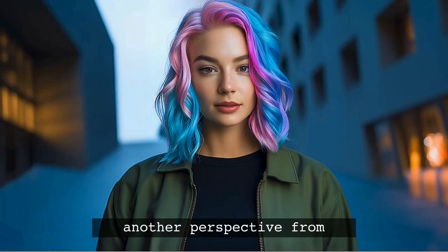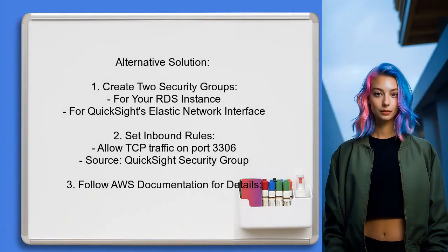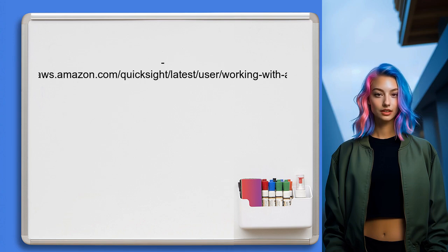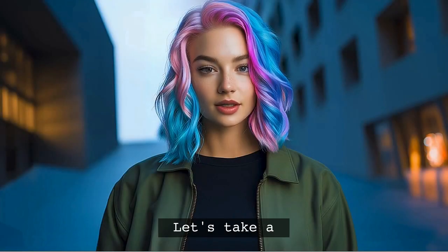Another perspective: you can connect Amazon QuickSight to an RDS database within a VPC by creating two security groups — one for your RDS instance, and another for QuickSight's Elastic Network Interface. This second security group is crucial as it allows QuickSight to access your database. Set the inbound rules for the RDS security group to allow traffic from the QuickSight security group on the appropriate port, like TCP port 3306 for MySQL.